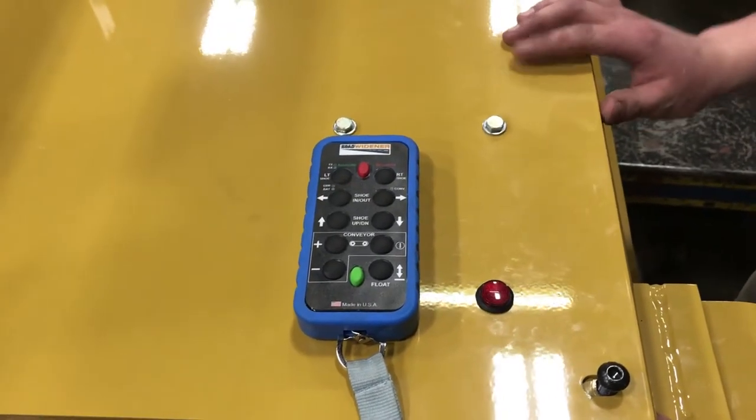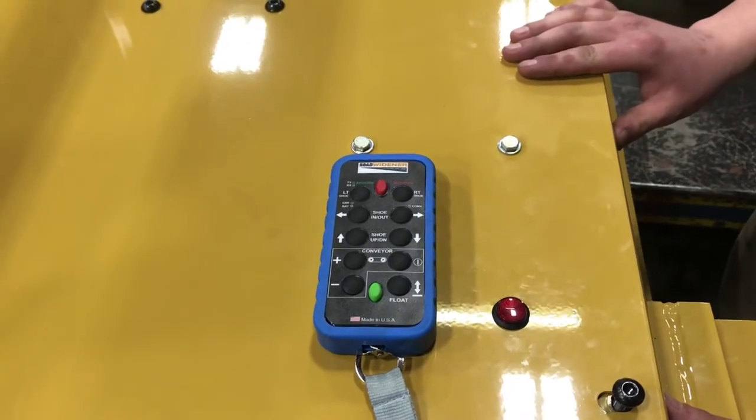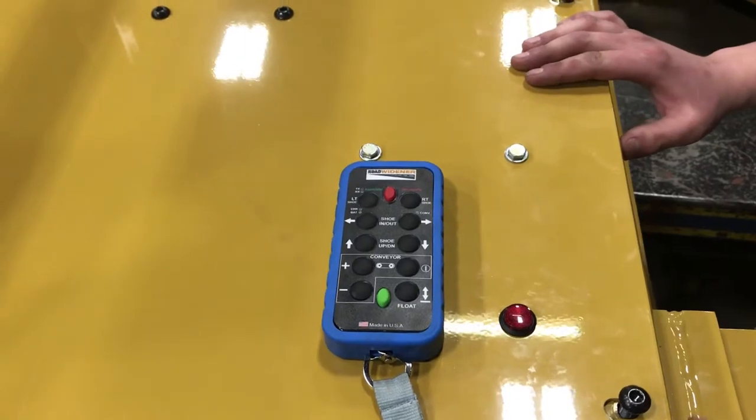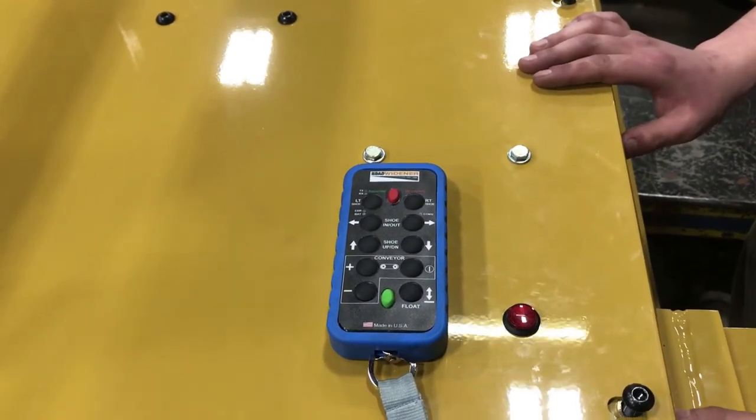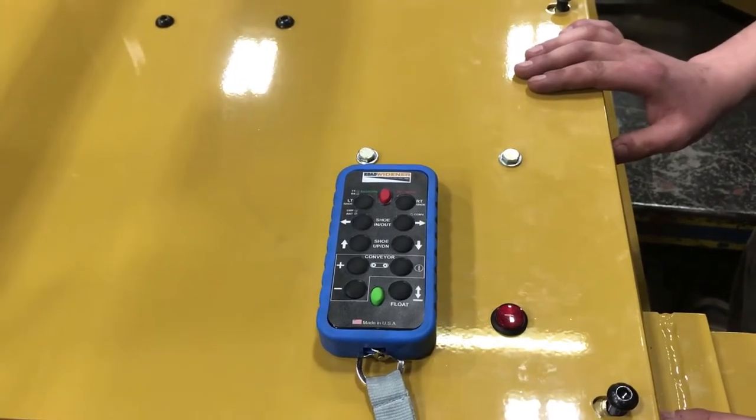This video will present the information required to pair a dual remote road widener machine. First step, make sure you have brand new batteries or fully charged batteries in a proper ambient temperature operating range.